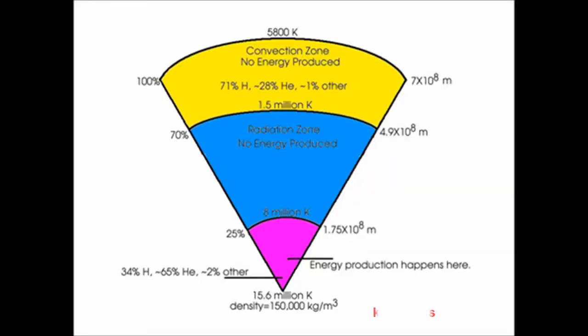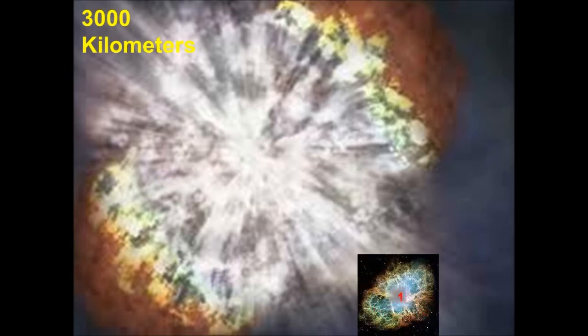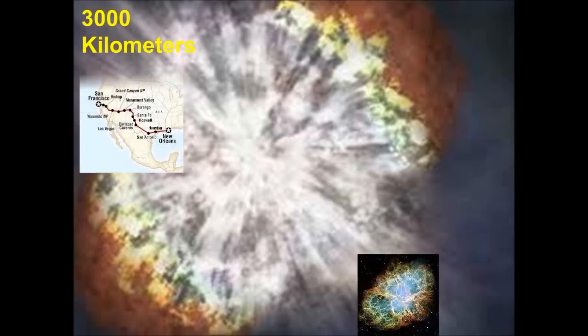The temperature in the core of the sun, as 15 kilometers long. And the temperature in the supernova, as 3000 kilometers long. The distance between San Francisco and New Orleans.